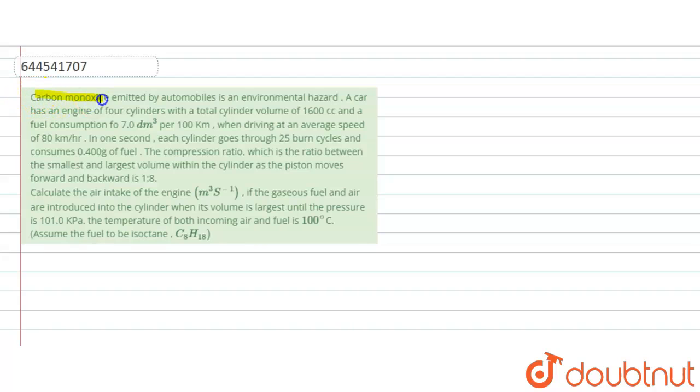Our question says carbon monoxide emitted by automobiles is an environmental hazard. A car has an engine of four cylinders with a total cylinder volume of 1600 cc and a fuel consumption of 7.0 decimeter cube per 100 kilometers when driving at an average speed of 80 kilometer per hour.